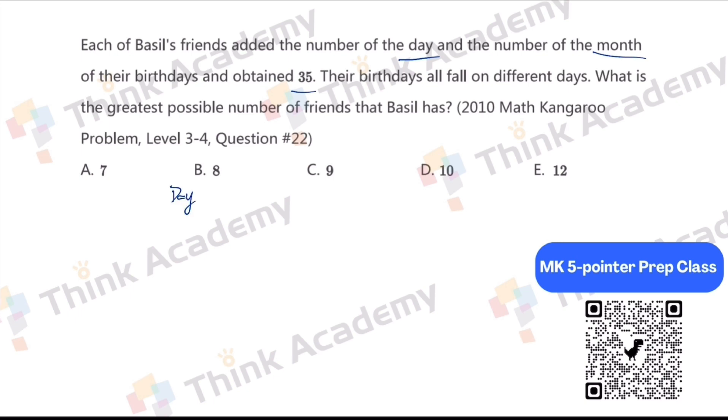Let's firstly write down the equation. Day plus month equals 35. For the day, the smallest number is 1, right? And the max number is actually 31. But it depends. For the month, it should be 1 to 12.